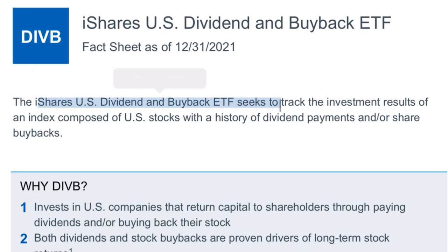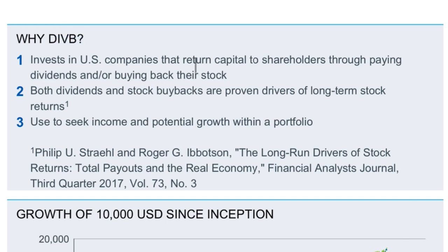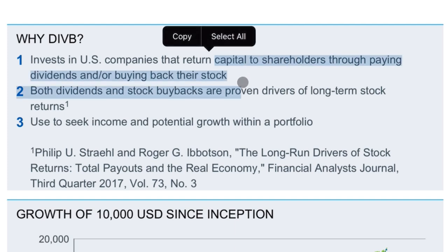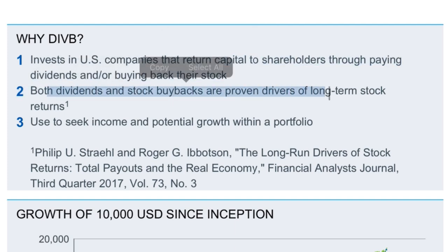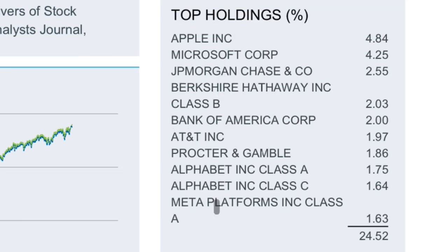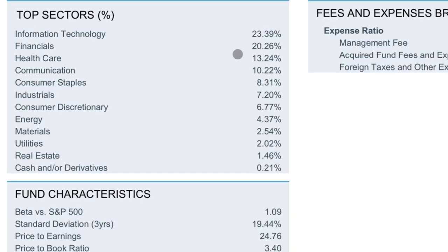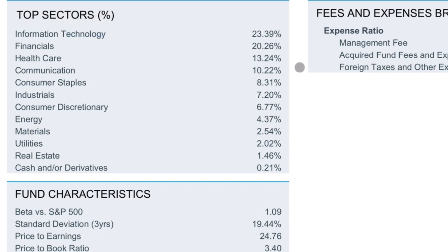The iShares US Dividend and Buyback ETF seeks to track the investment results of an index composed of US stocks with a history of dividend payments and or share buybacks. It was launched in 2017 and the expense ratio is kind of high at 0.25%. This focuses on companies that return capital to shareholders through paying dividends and or share buybacks, and both of these methods are proven drivers of long-term stock growth. Looking at the top 10 holdings — Apple, Microsoft, JPMorgan Chase, Berkshire Hathaway, AT&T, Procter & Gamble, Google, and Facebook — we can see why there's so much overlap with the S&P 500. In terms of sector allocation, information technology is 23% of this ETF, followed by financials and healthcare, which will help drive long-term price appreciation especially compared to a dedicated dividend ETF like SCHD.